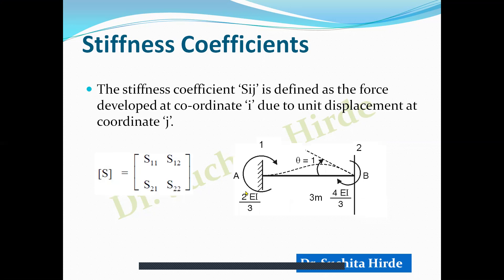Let us consider a simple example. Suppose this is a part of a beam with two rotational coordinates, 1 and 2. If we make the slope theta equal to 1 at one end, the moment required is 4EI/L. Considering length equal to 3 meters with constant EI, that gives 4EI/3 as the stiffness coefficient at this end. This coefficient is designated as S22 — the force developed at coordinate 2 due to unit displacement at coordinate 2.